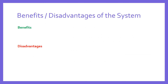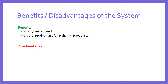What are the benefits and disadvantages? The key benefits are: first, no oxygen is required — it's an anaerobic system, so energy can be produced quickly without needing a large additional volume of oxygen. Second, it produces a greater yield of ATP than the ATP-PC system: one molecule of glycogen produces around three ATP molecules, whereas the ATP-PC system had a one-to-one ratio. Third, it lasts longer — up to a couple of minutes of energy for muscular contraction, which is significantly longer than the ATP-PC system.